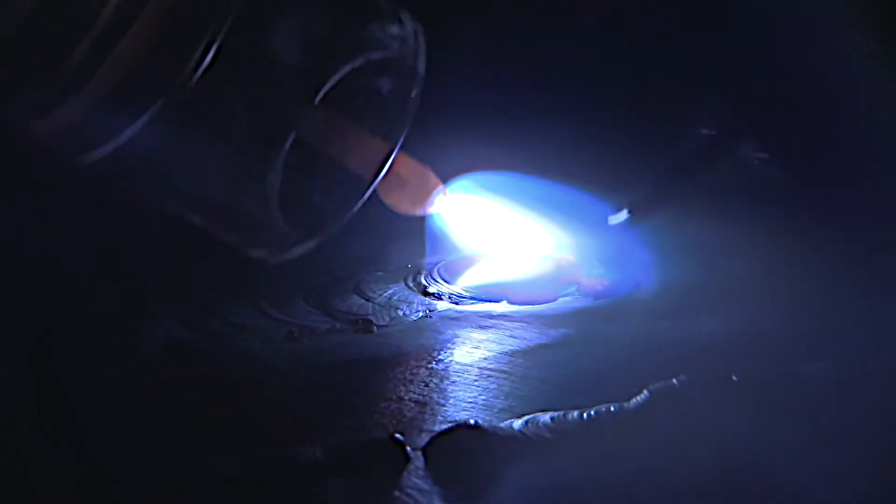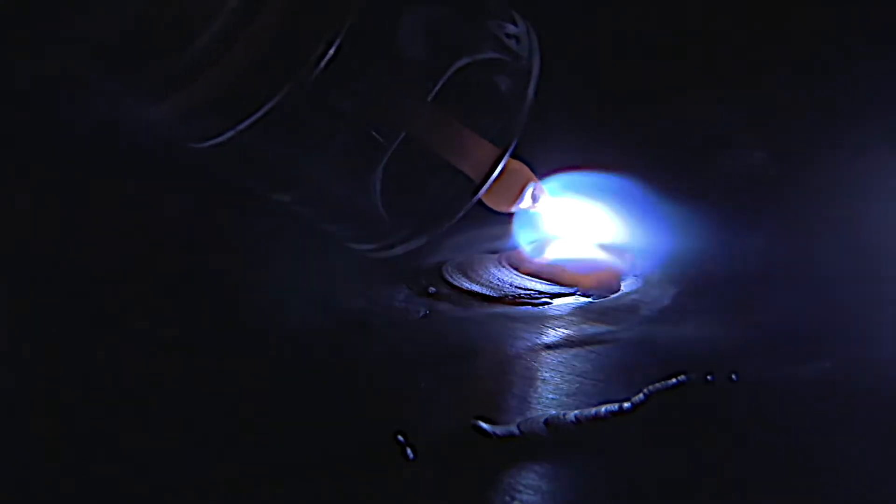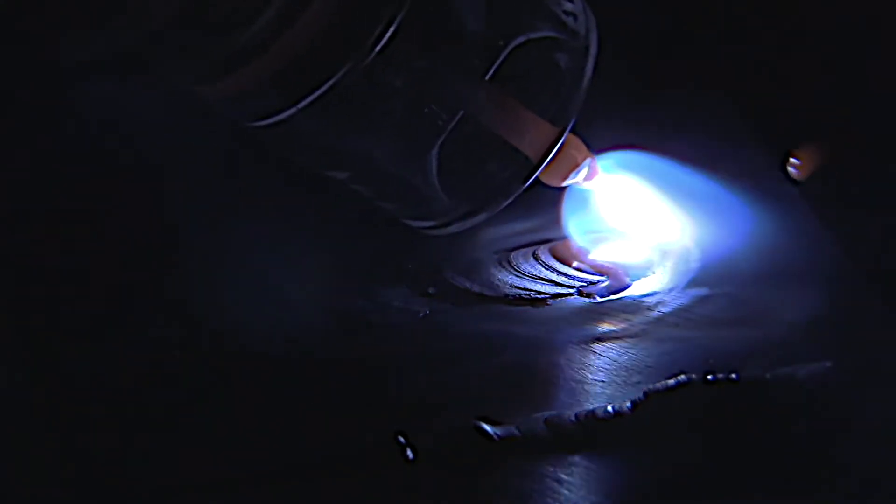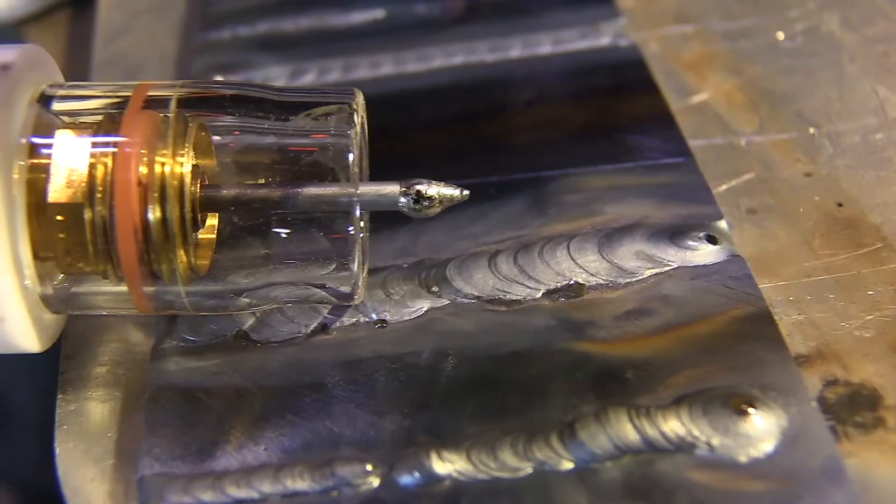When you contaminate your electrode stop and clean it resharpen it because when you got a big blob of steel on there that steel is vaporizing the arcs wandering all over the place it just makes for no fun and it's hard to make a good looking weld with a dirty electrode.